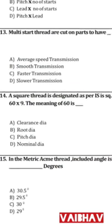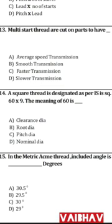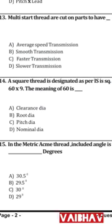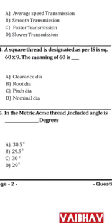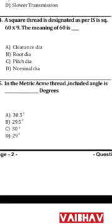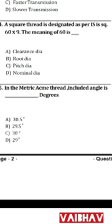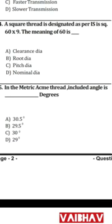Question 13: Multi-start threads are cut on parts to help faster transmission — the answer is C — faster transmission. Question 14: A square thread is designated as SQ 60×9, where 60 is the major diameter (nominal diameter) and 9 is the pitch. The answer is D — nominal diameter.